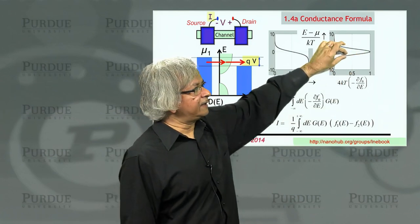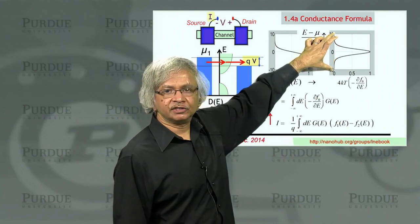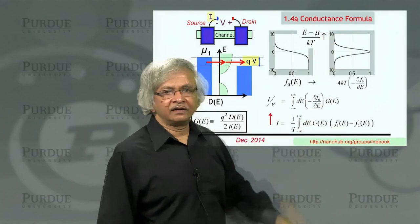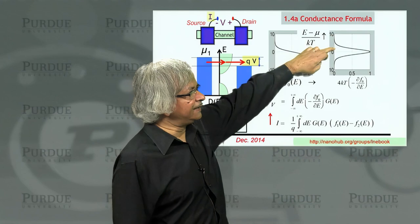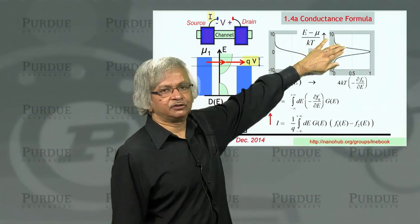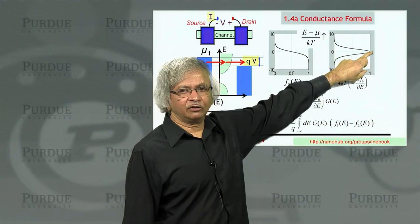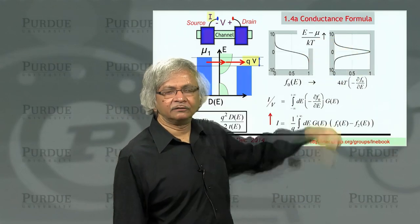And as you go away from the electrochemical potential, it gradually goes to zero. The range over which it goes to zero is roughly 4kT. In fact, what we'll show later is that the area under this curve is actually 1. So roughly speaking, you can think of it as if the peak is 1 over 4kT, the width is 4kT, and so the area is about 1.